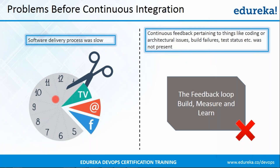So let us have a look at the fourth problem, that is continuous feedback. Continuous feedback related to things like build failures, test status, etc. was not present, due to which the developers were unaware of how their application is doing.